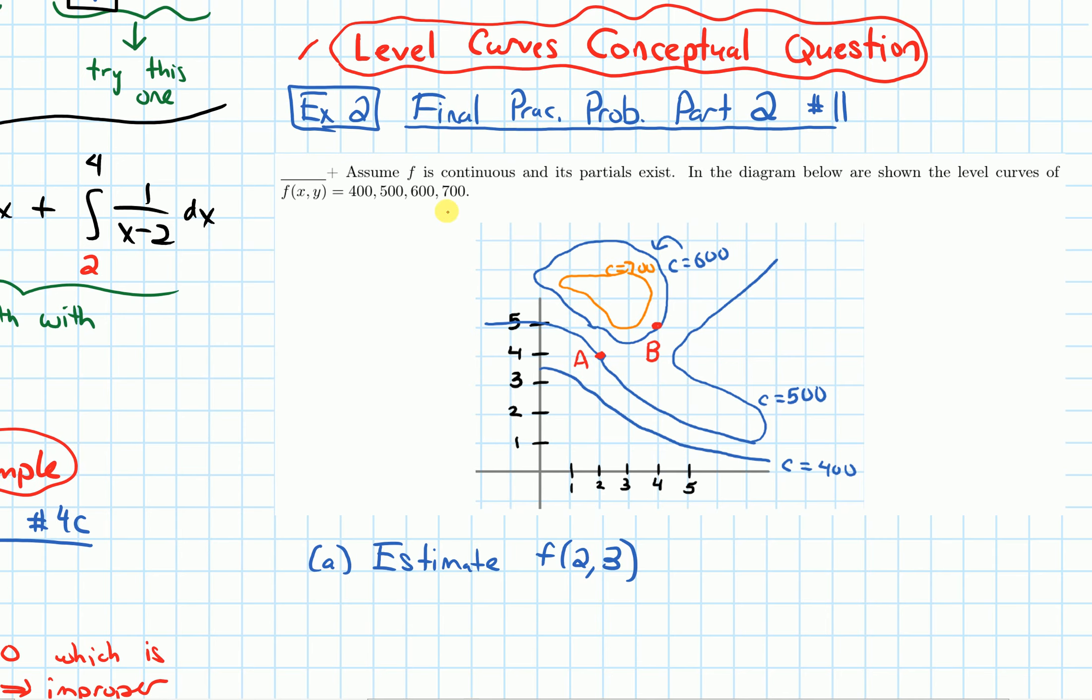In this question, we have this function f's level curves. A few of them are drawn out. We have the level curves when c is 400, when c is 500, when c is 600, and when c is 700, that one in orange. I'm going to look at a couple of parts of this question, the first being part A, where we want to estimate f of 2, 3.